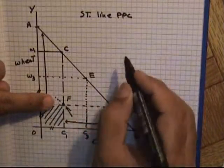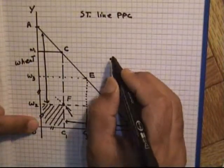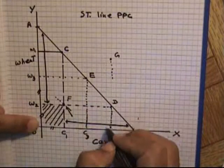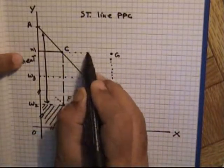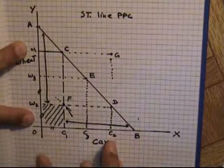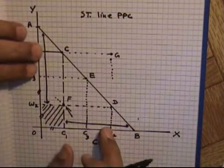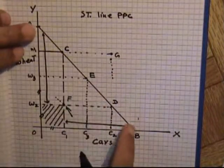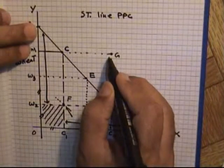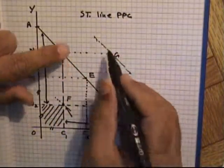If the situation is the opposite — for example, demand is at point G beyond the production curve — this shows that the country requires more cars and more wheat than it is capable of producing. Since even with all resources fully employed the maximum production can only be on this line, point G is beyond the country's production capacity. Therefore, the country needs to increase its production resources if the government wants to meet the desired demand level.